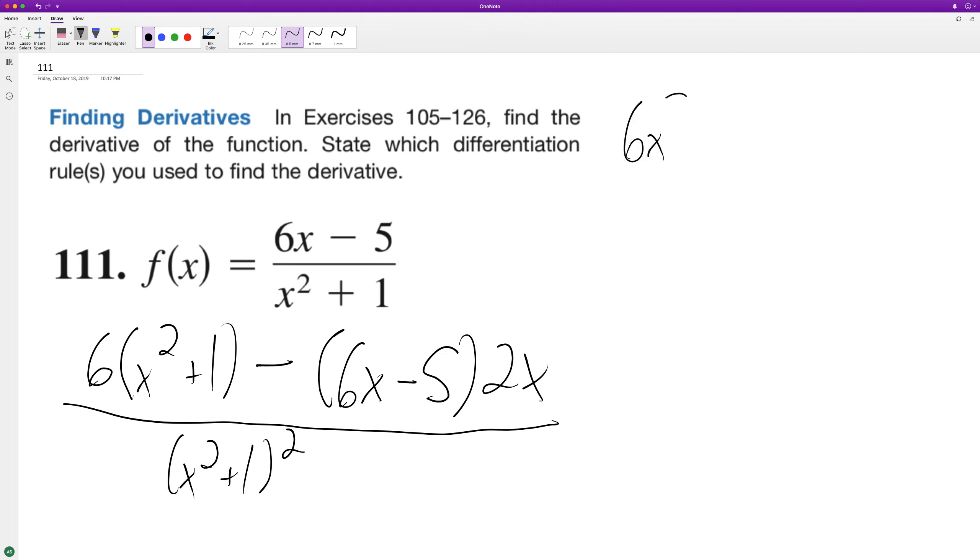So we end up with 6x squared plus 1 minus 12x squared plus 10x all over x squared plus 1.